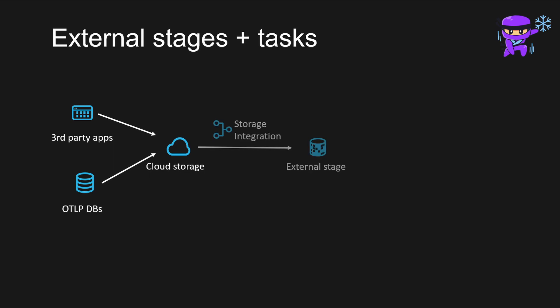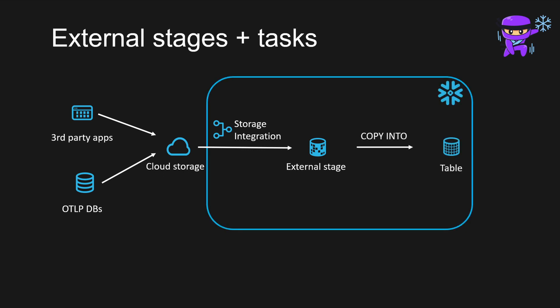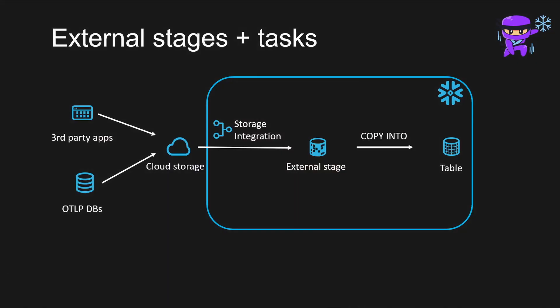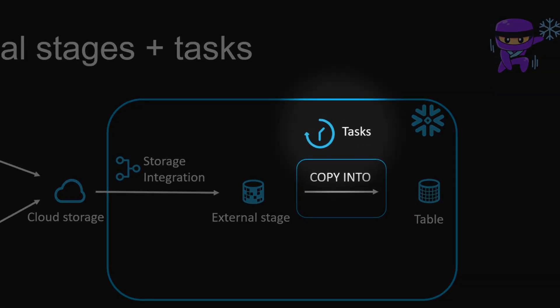Picture a scenario where you plan to store data in the cloud, like Amazon S3, or you already have some data there. This is where external stages play a crucial role. Acting as virtual bridges, external stages facilitate the movement of data between cloud storage platforms and Snowflake. Users can interact with and manage data in these external stages using SQL commands, just as they would with data directly stored within Snowflake, without actual data movement. However, if you still prefer to store data directly within Snowflake, you can run a COPY statement for manual data movement, or automate this process through tasks.